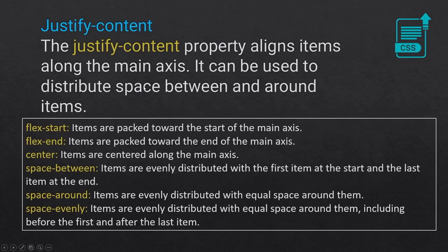Right now we're going to be heading over to the justify-content property. We can use this to align items along the main axis and distribute space between and around items. The most practical use of justify-content is to center elements on our page both horizontally and vertically.